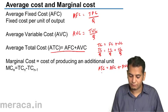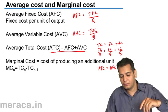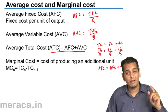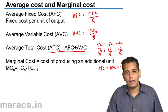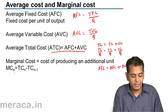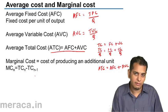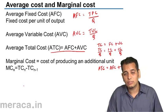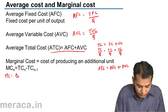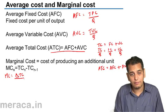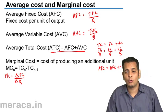Marginal cost is the cost of producing one additional unit — one extra unit. Marginal cost can be found out by this formula: marginal cost for n units equals total cost for n units minus total cost for n minus one units. Marginal cost can also be found out by this formula: change in total cost divided by change in quantity of units.